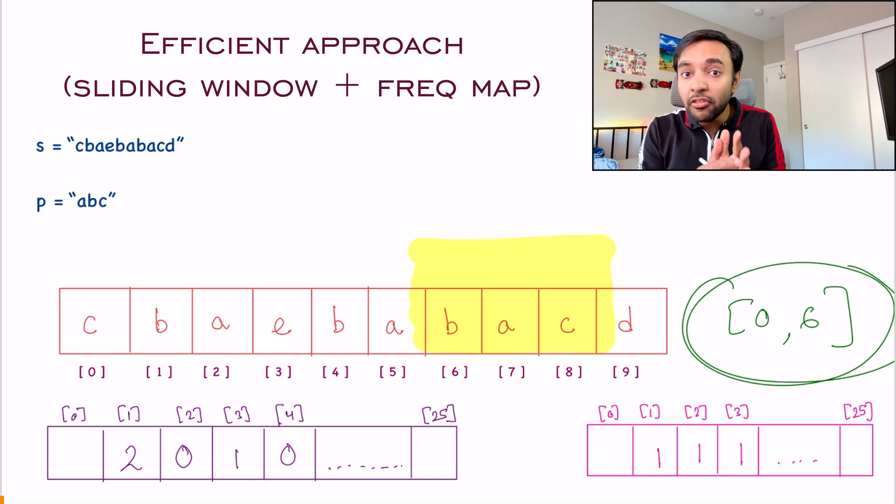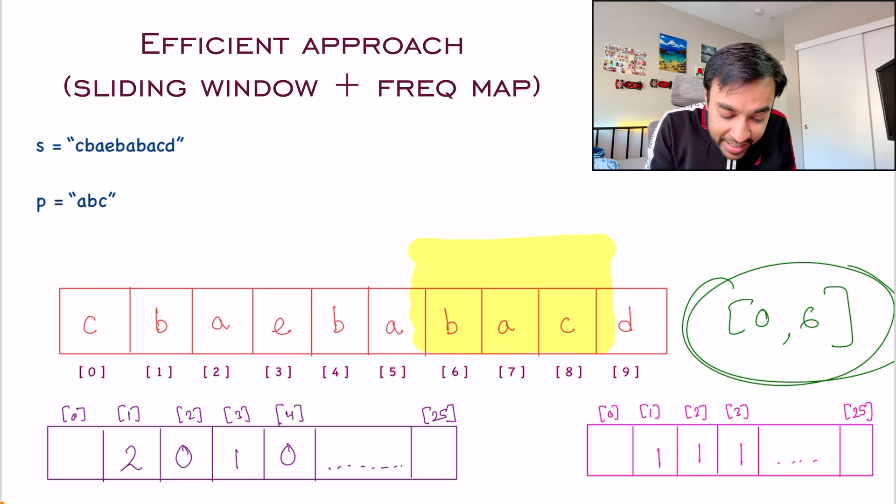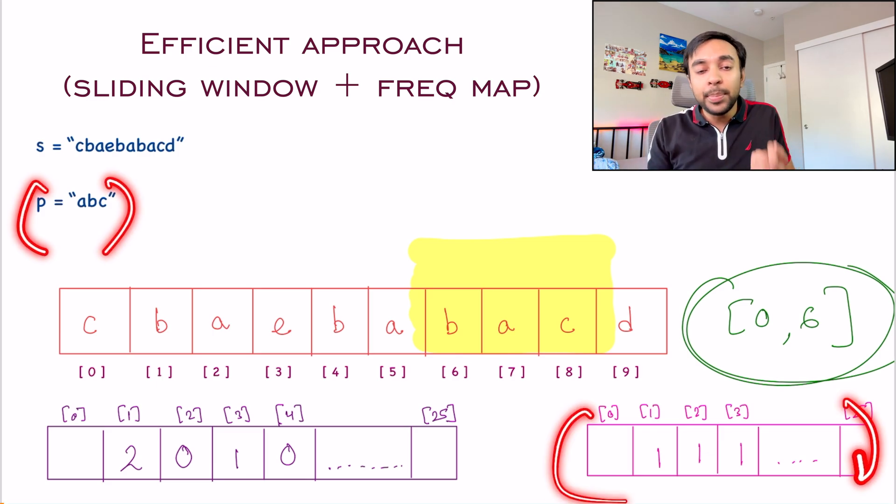And notice this will work for every scenario. Even our second test case, when we had ABAB. At every instance, you are capturing this is my current state of the frequency map. And this is the actual map of the input string P that I have.